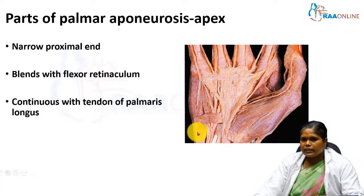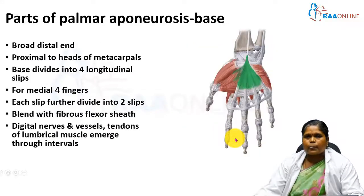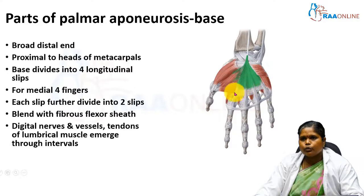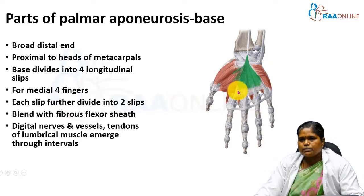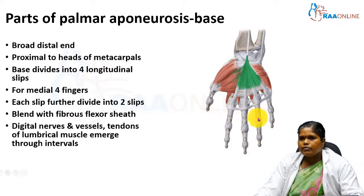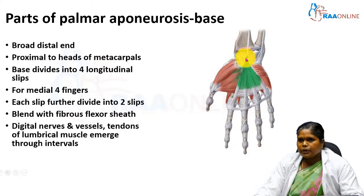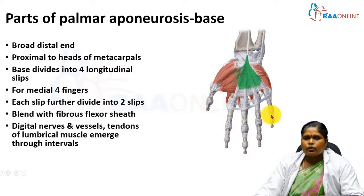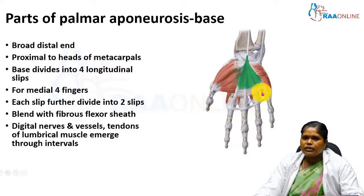The base of the palmar aponeurosis lies at the root of the fingers and divides into four slips — for the index, middle, ring, and little fingers. Each slip further divides into two slips that merge with the fibrous flexor sheath. All the deep fasciae are connected: the flexor retinaculum attaches to the proximal part, and the base is continuous with the fibrous flexor sheath. The digital nerves, vessels, and lumbrical tendons pass between the slips.